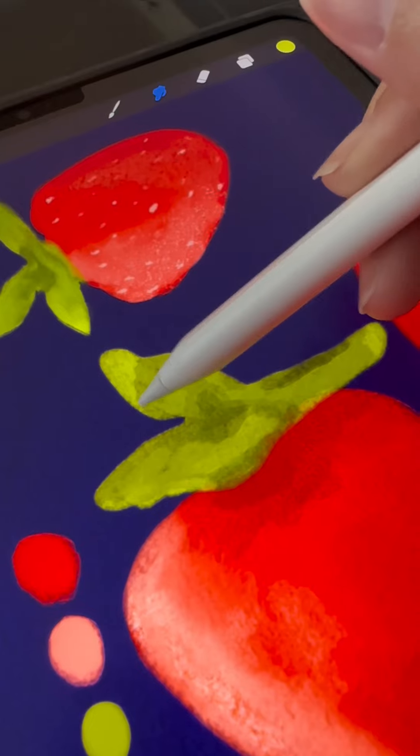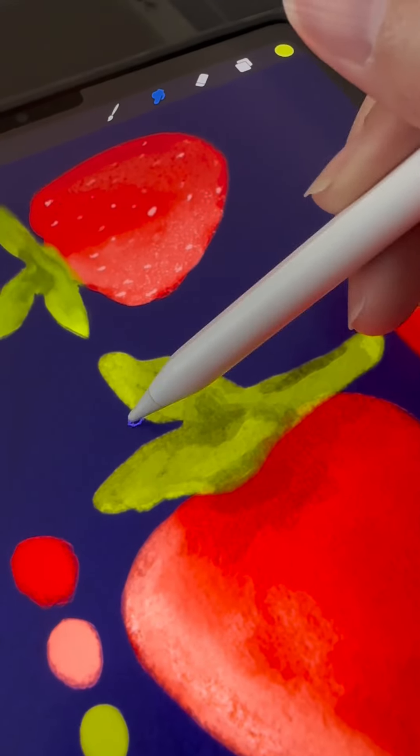Once done, select a brighter green and highlight the area where the light would hit. Blend in until it looks right.